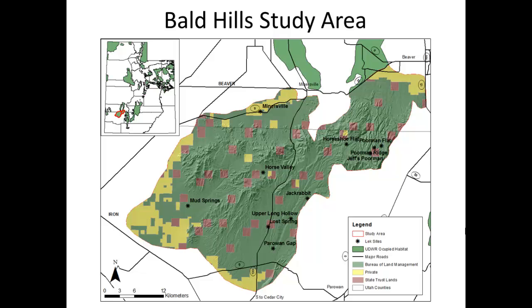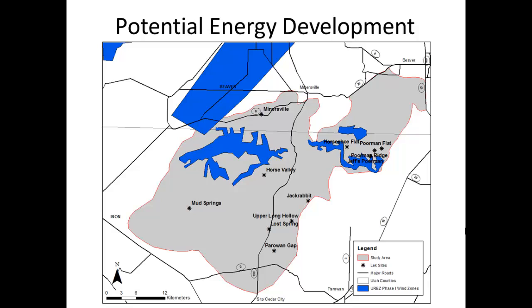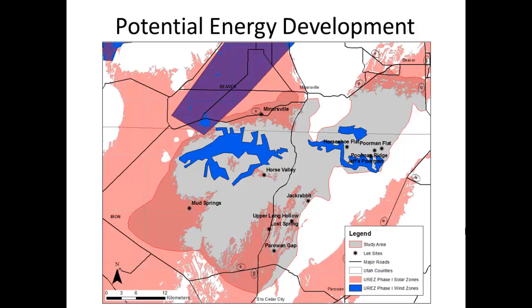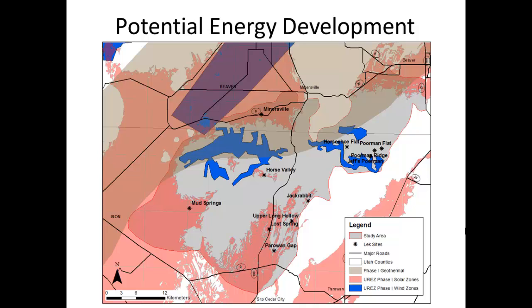Being on the fringe, these birds may be occupying habitats that are marginal compared to other parts of the distribution, so the birds themselves may have developed habitat preferences that are unique. In addition to the pressures of being on the fringe, this area of Utah has really high potential for renewable energy development. The Utah Renewable Energy Zones Task Force made zones for wind, solar, and geothermal energy potential, and there's significant overlap with the study area. These areas aren't designated to be developed, but being on BLM land there's definite potential for energy development.